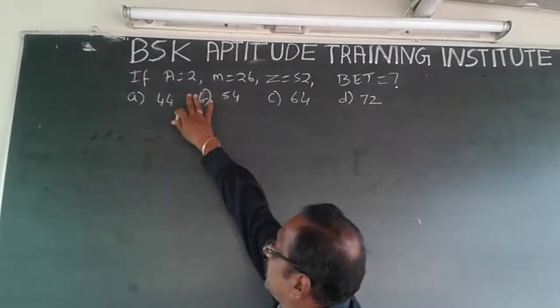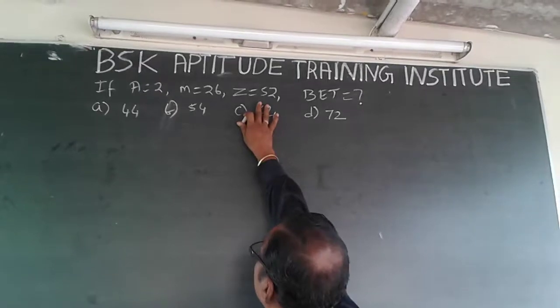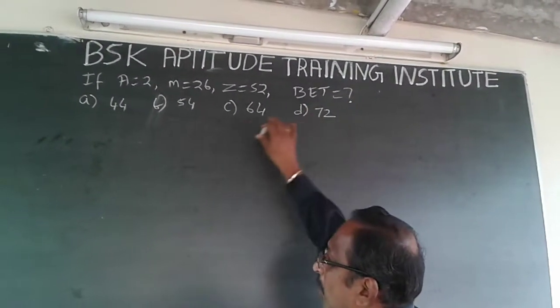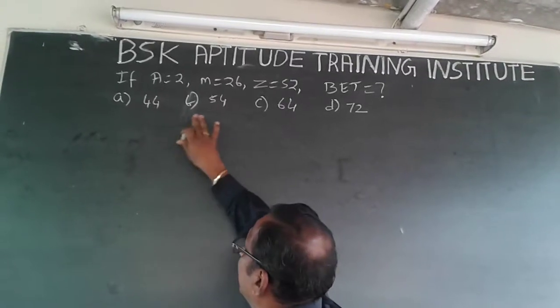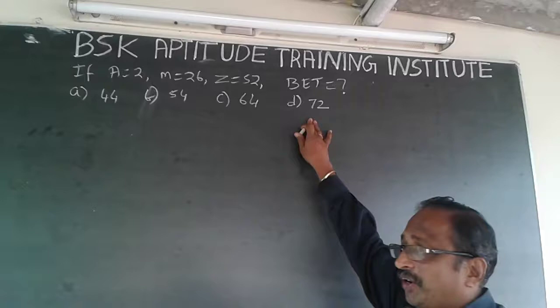I am going to handle this. If A is equal to 2, M is equal to 26, Z is equal to 52, what is BET? So options given are A is 44, B is 54, C is 64, D is 72.